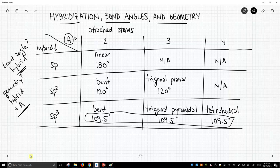So if we know the hybridization, we know what the bond angle will be. In order to know the geometry, we need to know both the hybridization and the number of attached atoms for our particular atom.